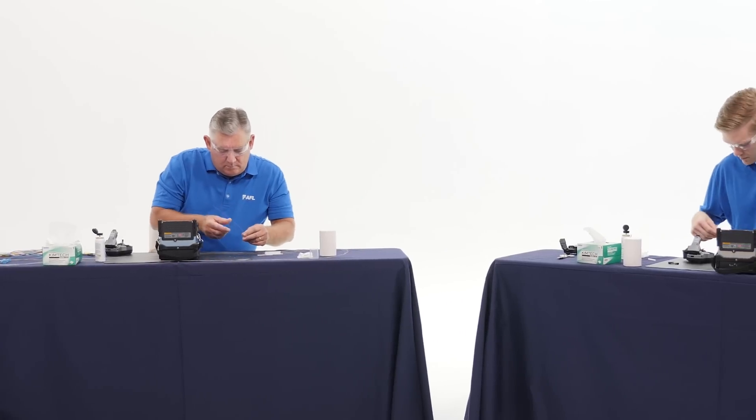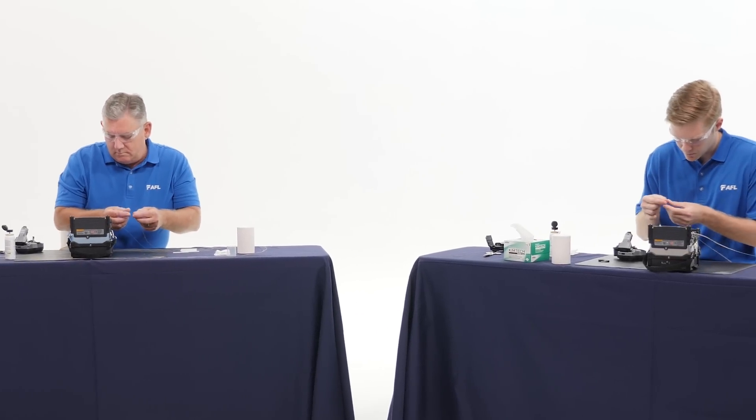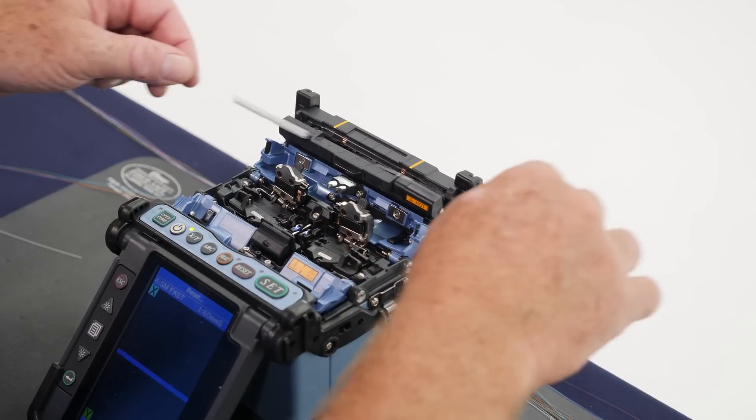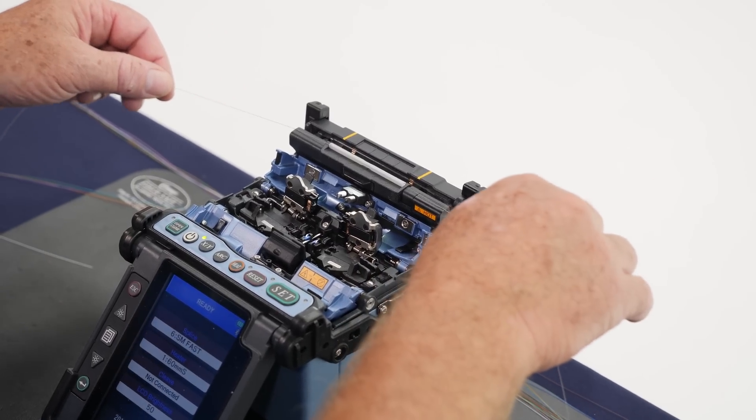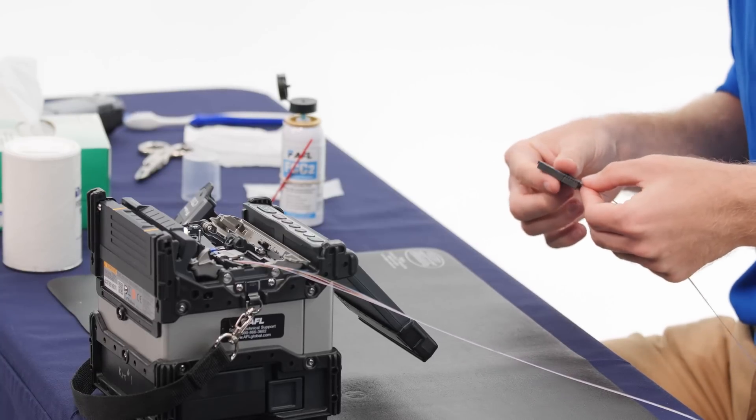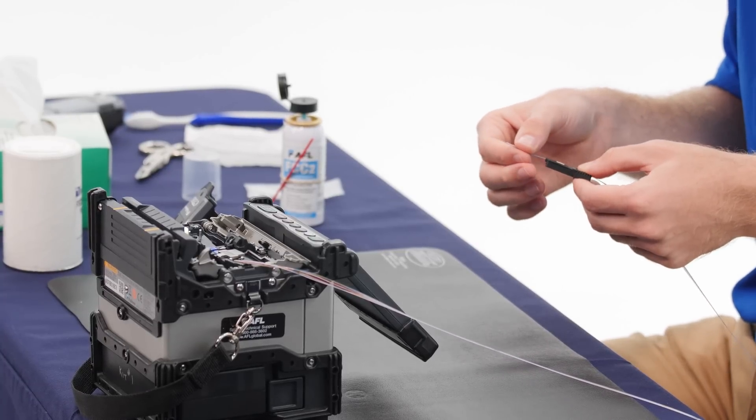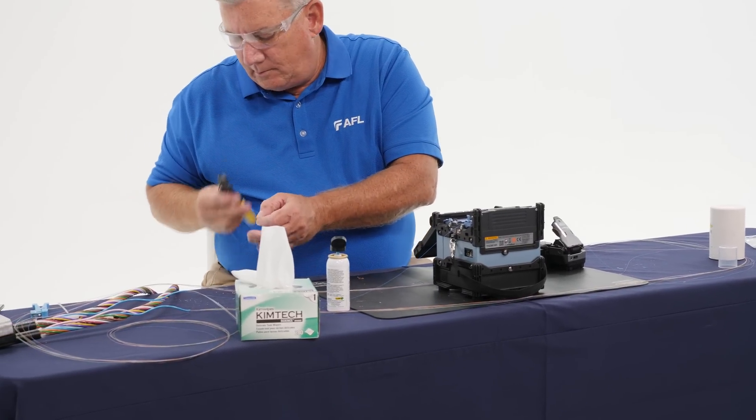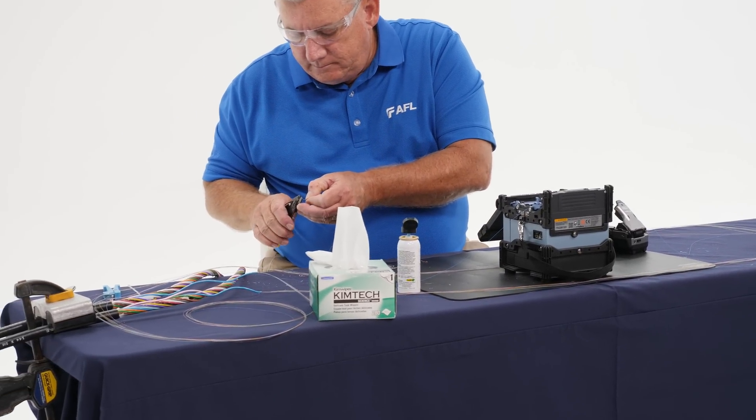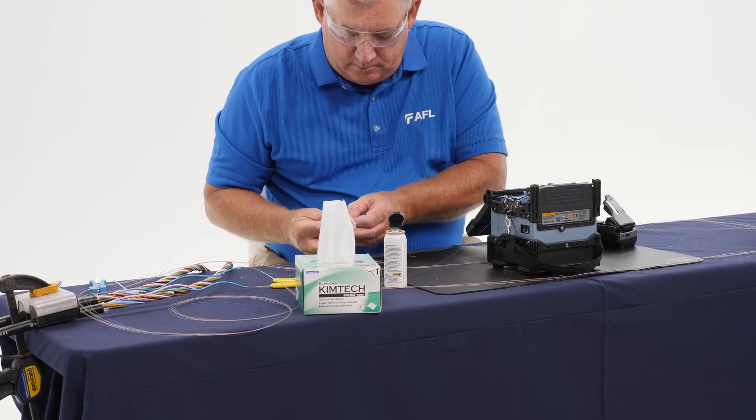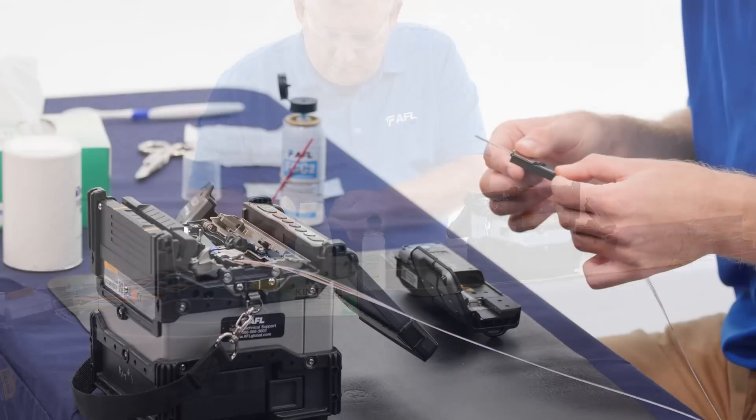Pat is already working on his second splice. Rob has not yet completed his first splice, but he's making up some ground now. He's getting ready to do his second preparation of the spider web ribbon. He will load it into the fiber holder. It's going into the fiber holder. Next, it will be going into the fiber stripper to remove the acrylate coating. There's Pat. He's reached for his third fiber. So Pat is already getting ready to complete his third burn. He has a significant head start on Rob.